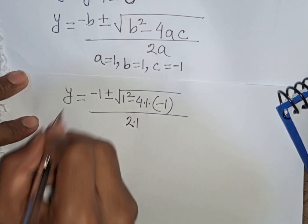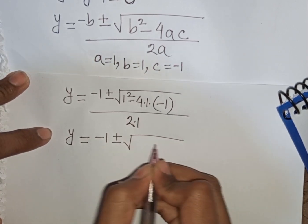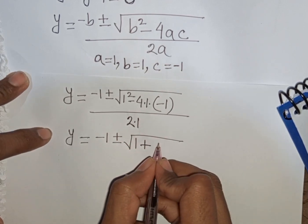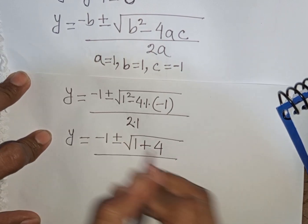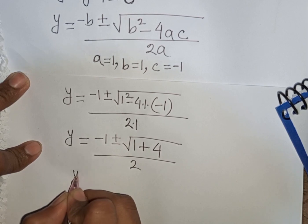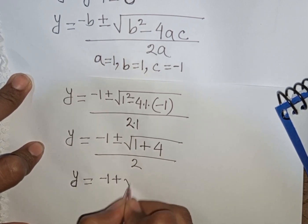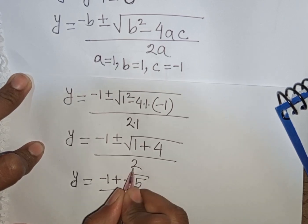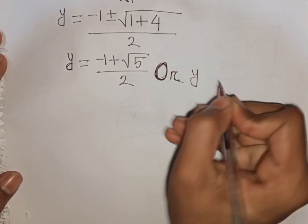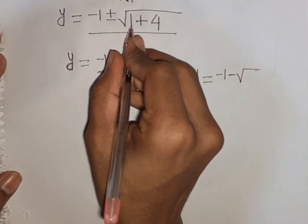This gives Y = (-1 ± √(1 + 4)) / 2, which is Y = (-1 ± √5) / 2. We now have two cases: Y = (-1 + √5) / 2, or Y = (-1 - √5) / 2.